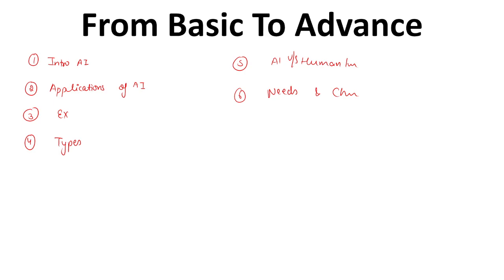Now moving to the advanced topics. In advanced topics, we will discuss the Turing machine, which is one of the most important parts of artificial intelligence. We will also discuss game trees. We all play online games, and game trees are used in online games. So we will discuss all basics and numericals of game trees.